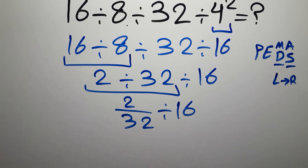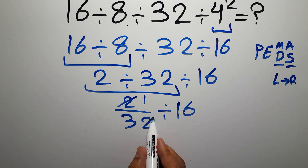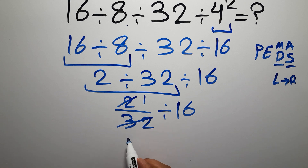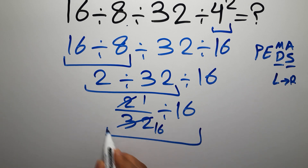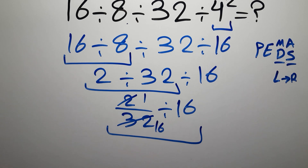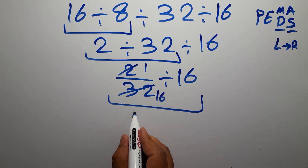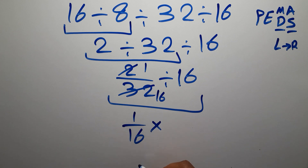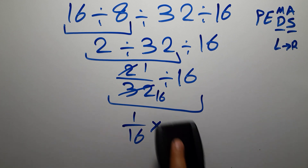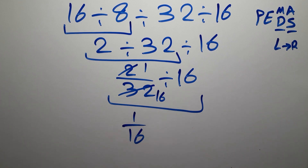2 divided by 2 gives us 1, and 32 divided by 2 gives us 16. So we have 1 over 16, divided by 16.